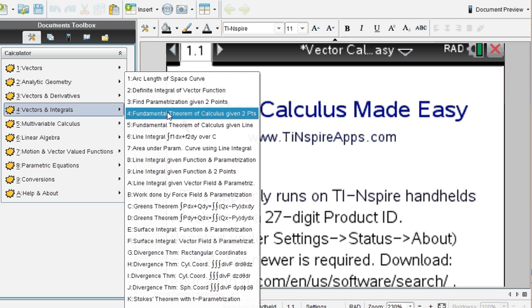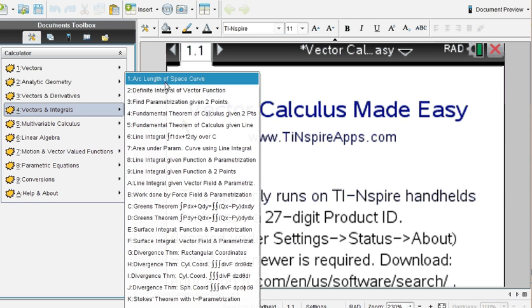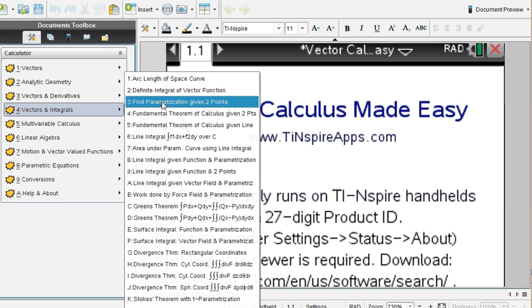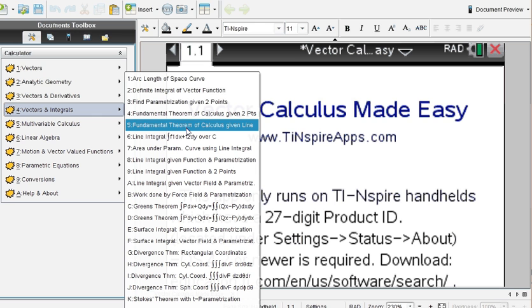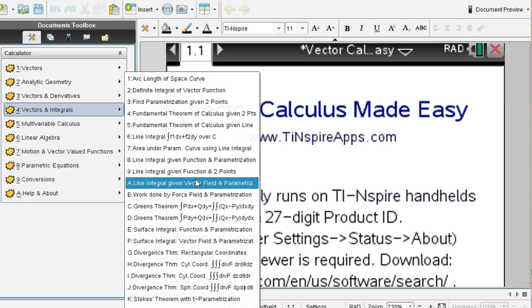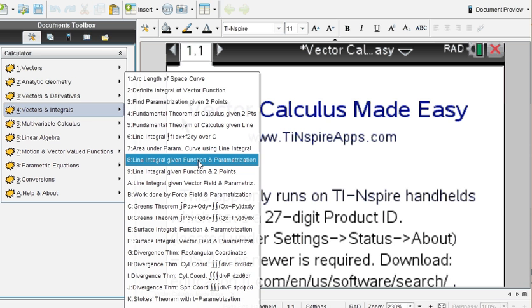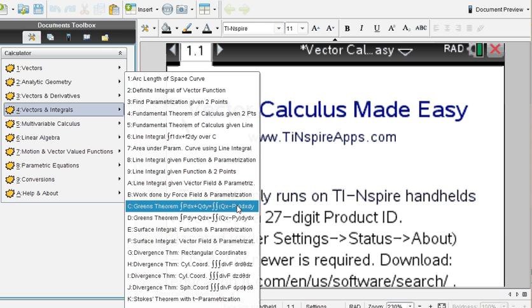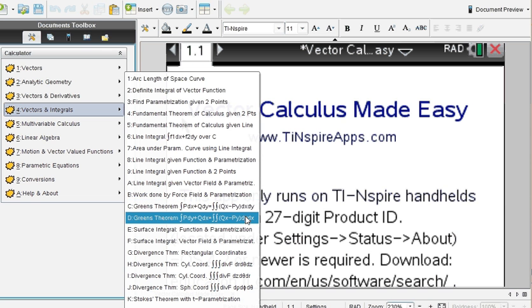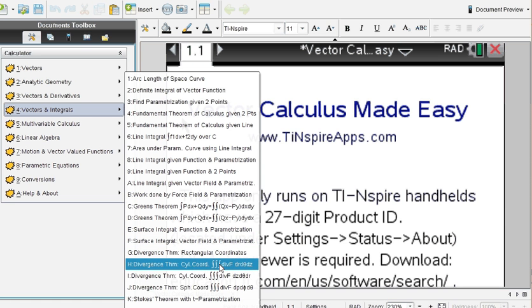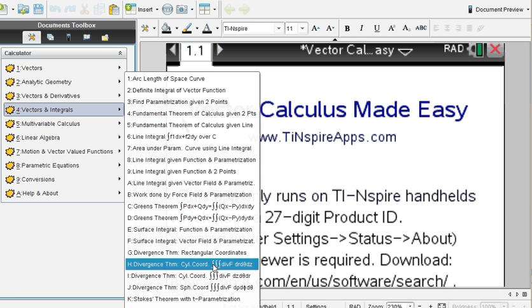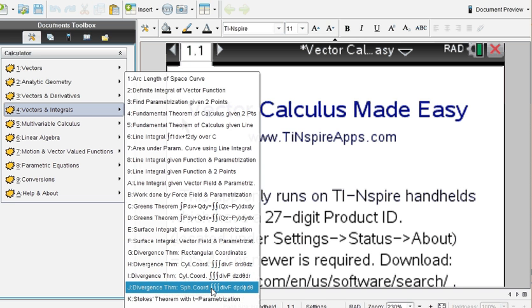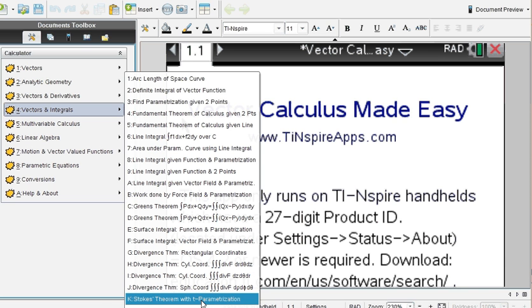Why? Because anything that is related to integrals can be done here. Arc length of a space curve. You can also find the parametrization given two points. The fundamental theorem of calculus given two points. Parametrization curves. Line integrals can be computed here. And then a variety of different line integrals based on what you're given in each problem. Green's theorem. Green's theorem in both directions or both orders. Dx, dy and dy, dx. Surface integrals. Divergence theorems. Here depending on what coordinates you're given. Cylinder. Different orders again here. Spherical coordinates. And lastly Stokes theorem. Stokes theorem with two different options.